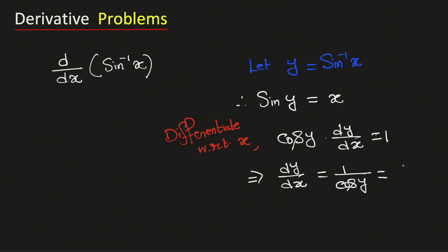And we know that cos y is same as square root of 1 minus sin square y. So this is same as 1 over square root of 1 minus x square, because x equals sin y.